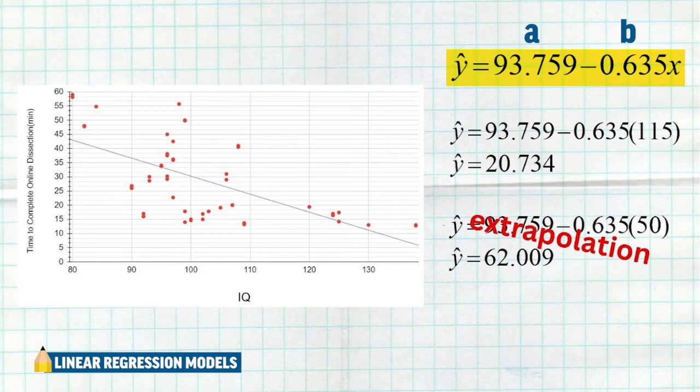So in this first example here, we see that we wanted to predict how long it would take a student to complete the online dissection with an IQ of 115. So that's exactly what a linear regression model does. It takes that explanatory variable, in this case 115, we plug it into the equation, and out comes the predicted time to complete the online dissection. So for a student that has an IQ of 115, we would predict somewhere around 20.734 minutes for them to complete the online dissection.